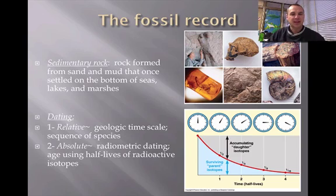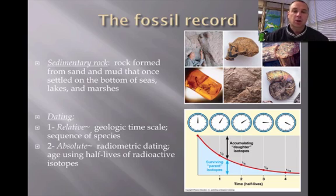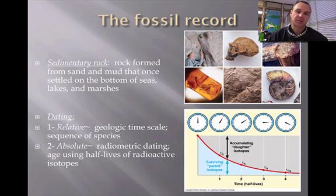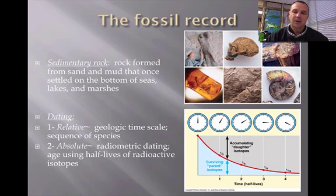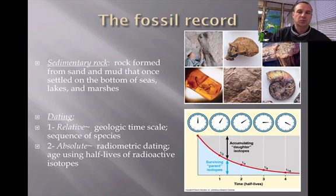Relative dating doesn't give an exact age; it just gives age relative to others. Absolute dating, or radiometric dating, is when we use some type of isotope to determine the exact age of a fossil. We use what's called a half-life — how long it takes for half the compound to decay — and we can work backwards to tell exactly how old the fossil was.